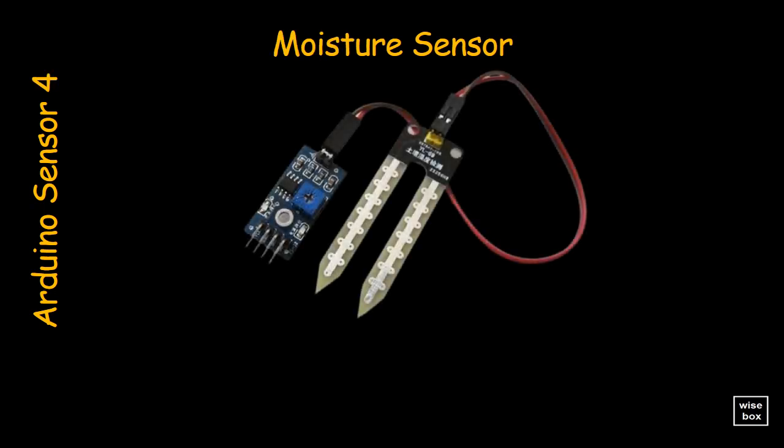The moisture sensor consists of two probes that measure the moisture level in the soil. The two probes allow the electric current to pass through the soil, and according to its resistance, measures the moisture level of the soil.